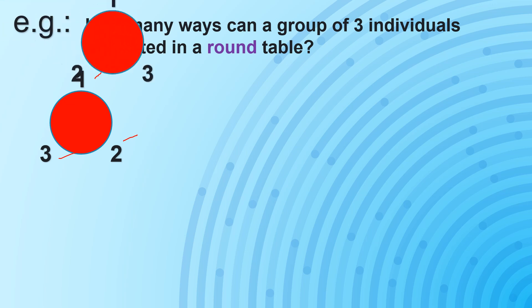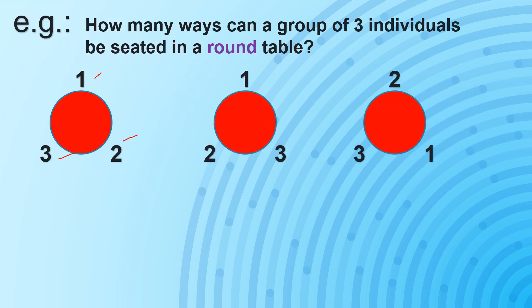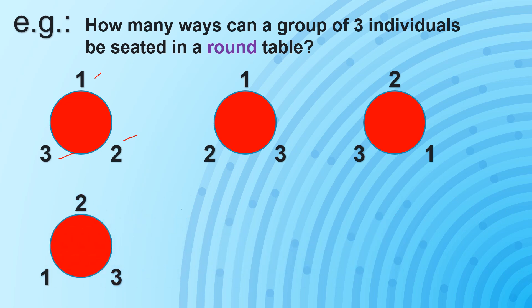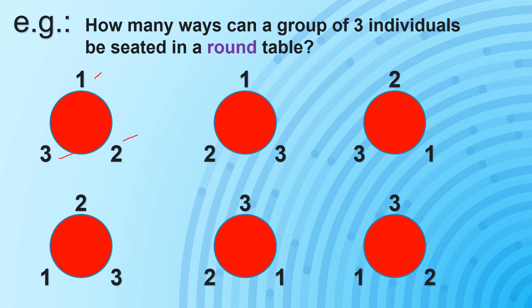We can also have: 1, 3, 2 then 2, 1, 3 then 2, 3, 1 then 3, 1, 2 or 3, 2, 1. So we might be thinking that we do have 6 unique arrangements.